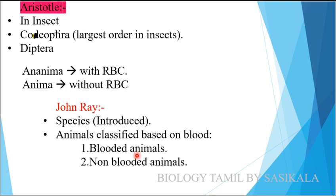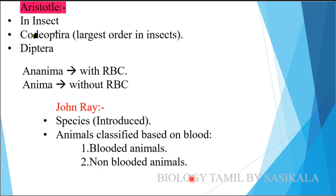Aristotle classified two categories of animals based on the presence of RBC. John Ray classified animals into two categories: blooded animals and non-blooded animals.